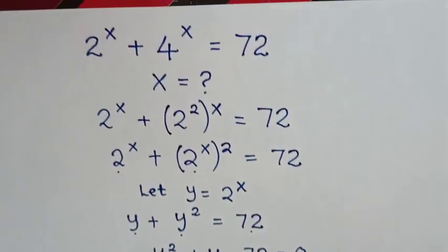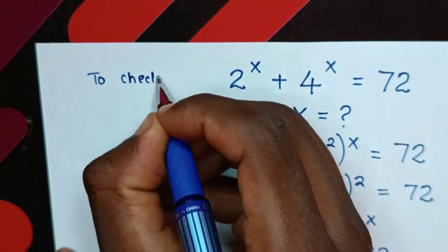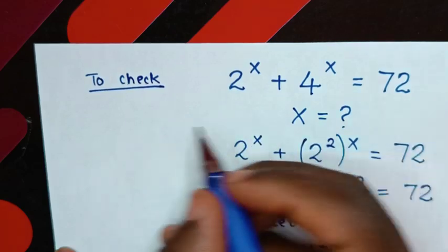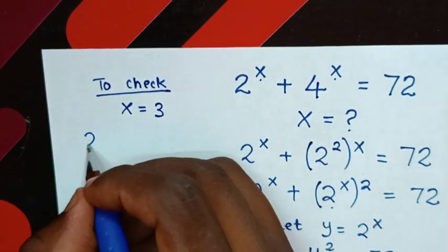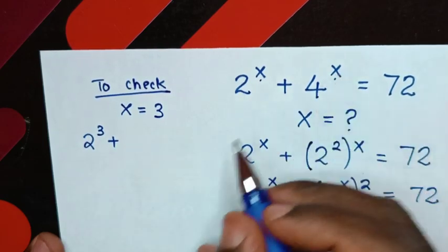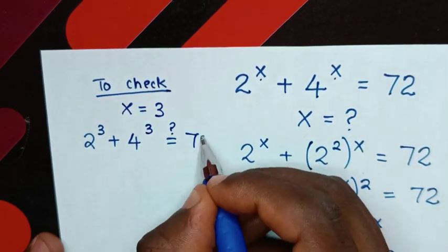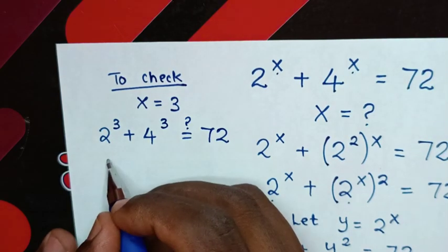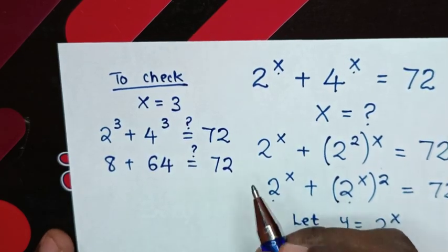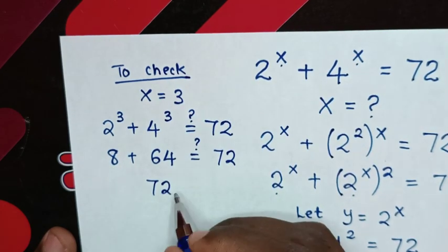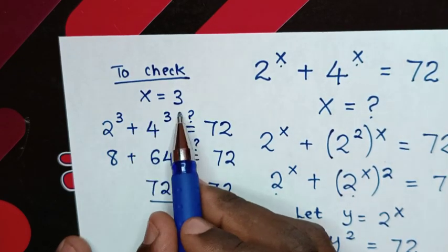Now to check if the value of x is correct: for x equal to 3, we substitute the value of 3 into the powers. So it will be 2 power 3 plus 4 power 3. Is it equal to 72? Then 2 power 3 is 8, plus 4 power 3 is 64. Is it equal to 72? Then 8 plus 64 is 72, which is equal to 72. So left side and right side are equal — it's true for x equal to 3.